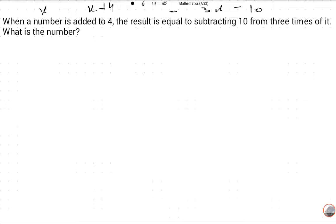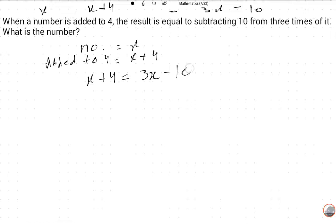Number is equal to x, so added to 4, x plus 4. And then x plus 4 is equal to 3 times of it subtract from 3 times, 10 is subtracted from 3 times of the number. So this is the simple equation. Now we solve this.